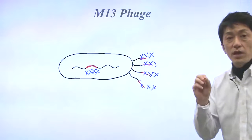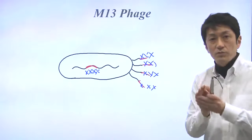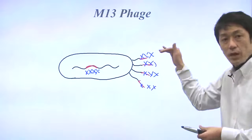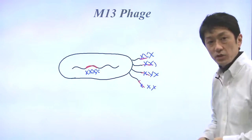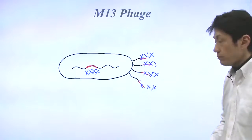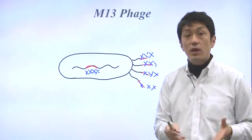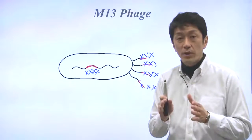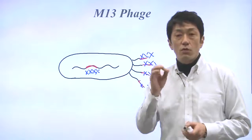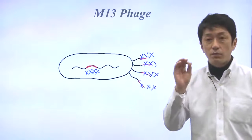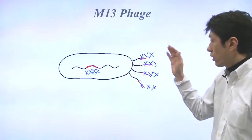Because each phage includes only one random sequence, a single peptide is present on the surface of the phage. The logic behind the phage display method is the same as that behind the one-bead-one-compound approach, in which one kind of peptide is attached to one bead.